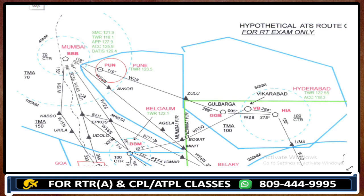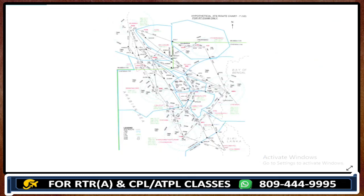Upper area control limit in chart number seven — this chart is an old one. We would share the new charts. And nowadays, DME distances are also mentioned on the charts. If you are going to attempt the exam, do not get confused — these are the old charts. Now, WPC is using new charts.